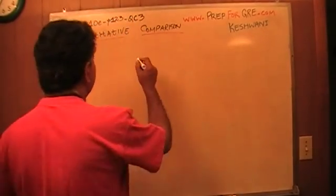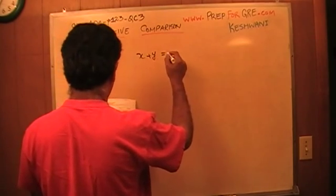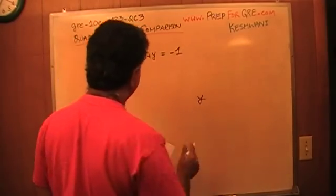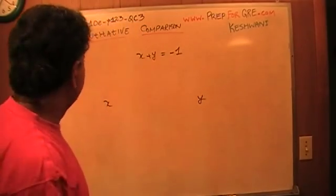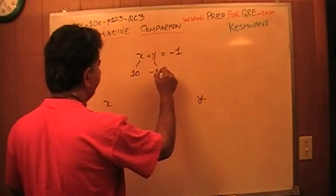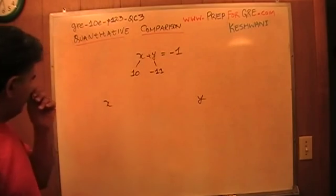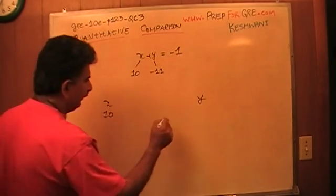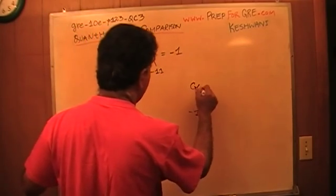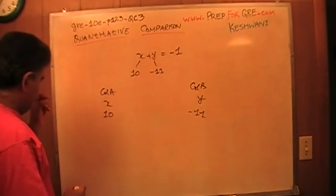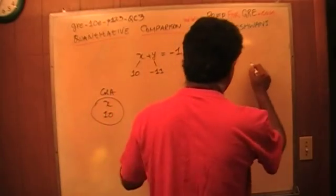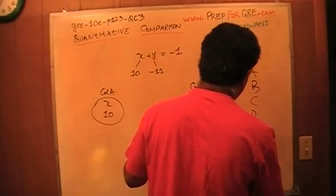So we are told that x plus y equals negative 1 and we are asked to compare x versus y. Well, what should I do? Let's plug in numbers. Let's suppose x is 10 and y is negative 11. That will give me negative 1. In which case, x is 10, y is negative 11. Column A, column B. We found one instance where quantity in column A is bigger, which tells me we're not done yet. I'm not suggesting that the answer is A.